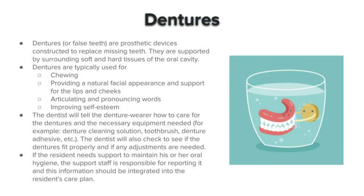The first piece of equipment we're going to talk about — and yes, this is considered adaptive equipment — is dentures. Dentures or false teeth are prosthetic devices constructed to replace missing teeth, supported by the surrounding soft and hard tissues of the oral cavity. Dentures are typically used for chewing, provide a natural facial appearance and support for the lips and cheeks, are helpful for speaking and articulating words, and improve self-esteem.